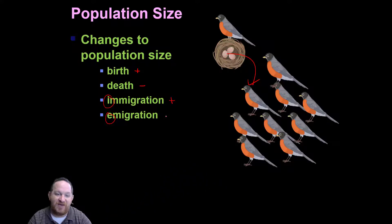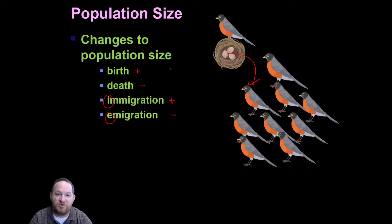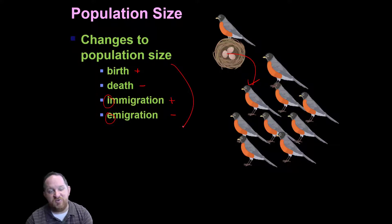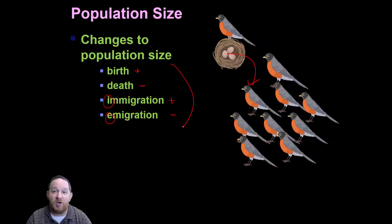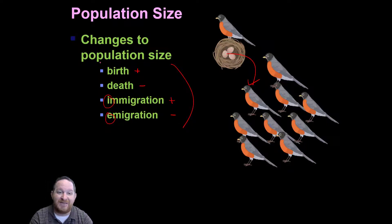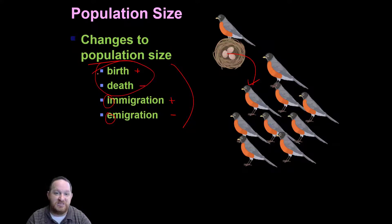Emigration — think exiting from the population. A bird says 'I've had enough of the view' and then they leave. So those are the factors that affect population size. And in a subsequent video that you will watch later, I talk about all of the formulas that are used to calculate population size, and you've got to take these into account.